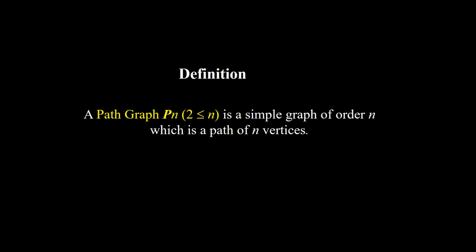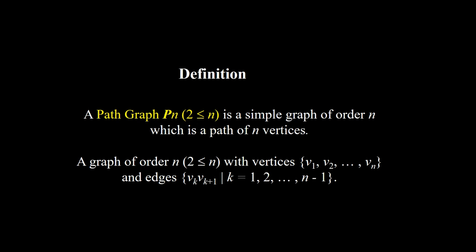A path graph, denoted by Pn where n starts from 2, is a simple graph of order n which is a path of n vertices. In other words, Pn is a graph of order n with vertices v1, v2, and so on to vn, and edges vk vk+1 where k is 1, 2, and so on until n minus 1.